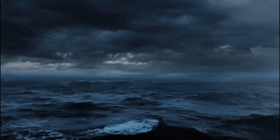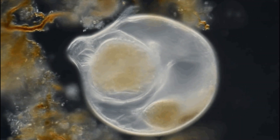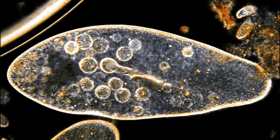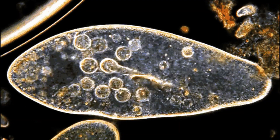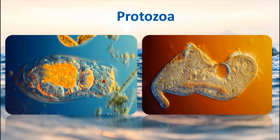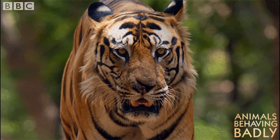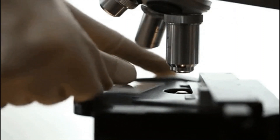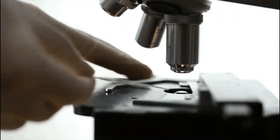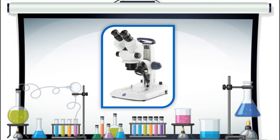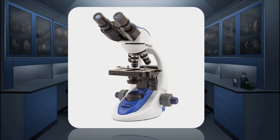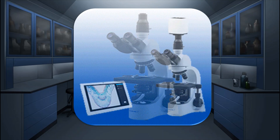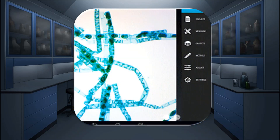It took about 80 crore years for its surface to cool down, and when it cooled down, water bodies formed on the surface of the Earth. Various kinds of unicellular organisms or living things first appeared in the water. Unicellular means an animal consisting of a single cell or having only one cell. These unicellular organisms are known as protozoa, and slowly they developed into multicellular organisms. These protozoa are so tiny that we cannot see them without a microscope.